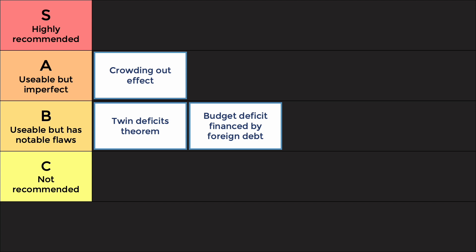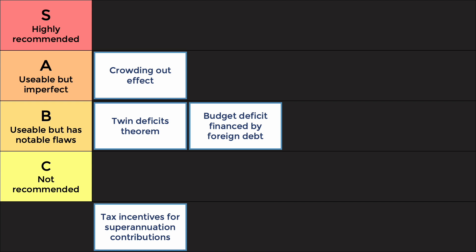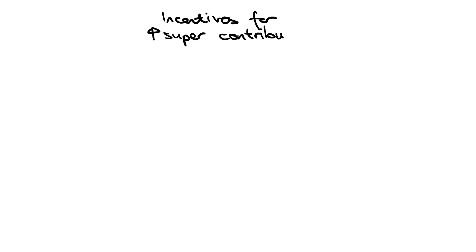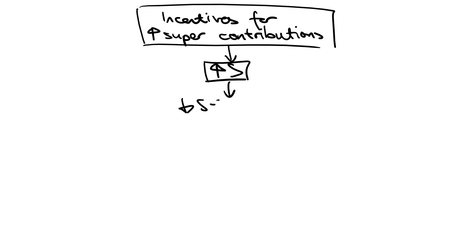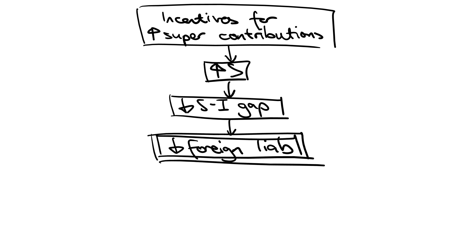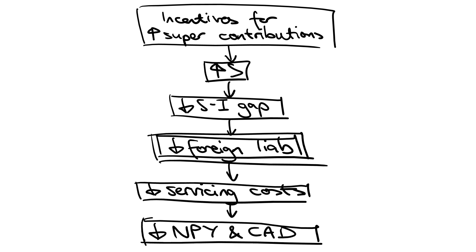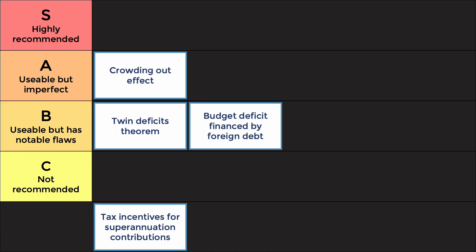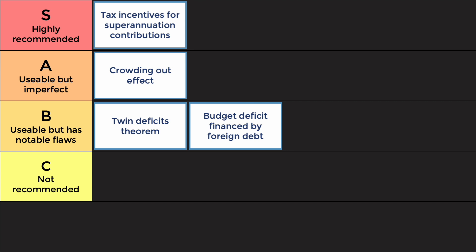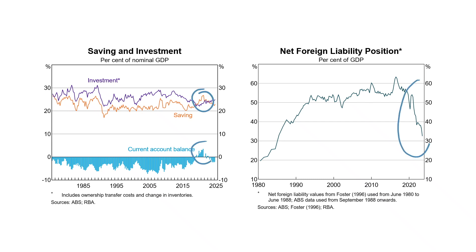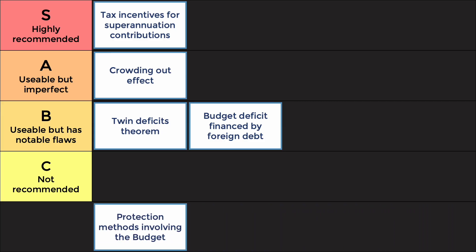Here are the S-tier arguments. First: tax incentives for superannuation contributions, including tax deductions or lower income tax rates for making super contributions. This leads to higher savings ratios, providing capital for investment and reducing the savings-investment gap, resulting in lower net foreign liabilities. Servicing costs are also lower, improving the net primary income outflow and current account deficit. This is S-tier because of the strong evidence of the Australian government's efforts to encourage superannuation and improve the savings ratio, and clear evidence of how increased savings improved the current account during COVID-19.